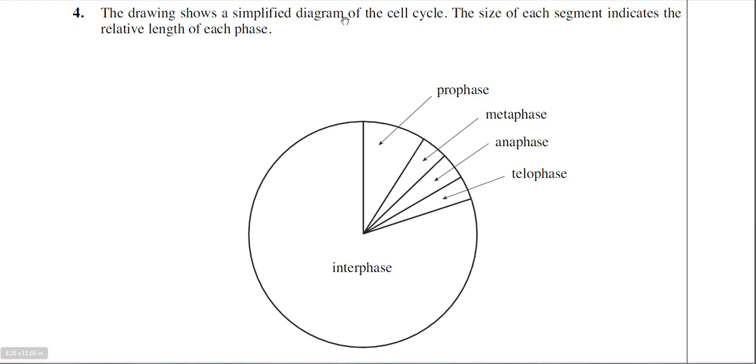The drawing shows a simplified diagram of the cell cycle. The cell cycle is something I've brought up in the notes I've written. The size of each segment indicates the relative length of each phase. Interphase is the biggest section because it lasts typically about 23 hours, and the other phases belong to mitosis and those will last approximately one hour.